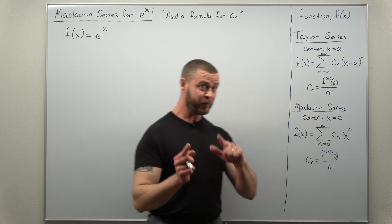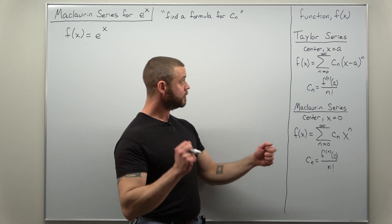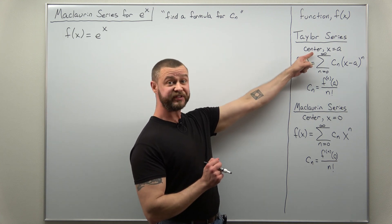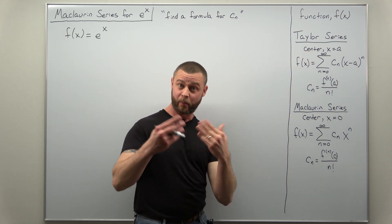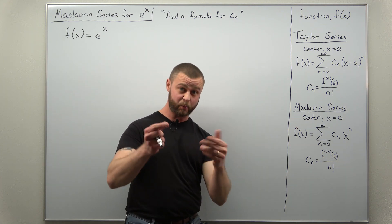Now the only difference between a Taylor series and a Maclaurin series is the center point. For a Taylor series the center is at x equals a where a is a non-zero number, and a Maclaurin series the center is x equals zero.